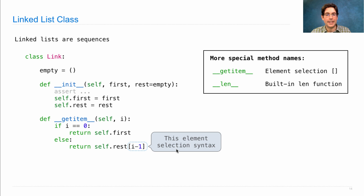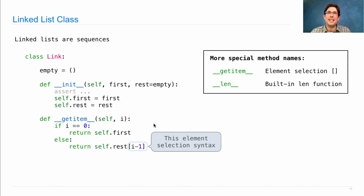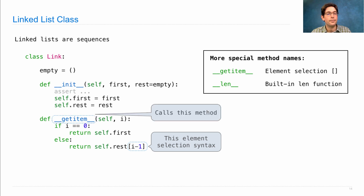This element selection syntax is actually going to invoke the same method, assuming self.rest is a linked list — which it is, or it's empty. If it's empty, we'll get an error that says the index is out of bounds. If it's not empty, then eventually as we call __getitem__ over and over again with i minus 1, we'll eventually have i equals 0, and that will be the first element of the list we're looking for. This element selection syntax calls this method — that's a built-in feature of Python, a feature of this special method name.